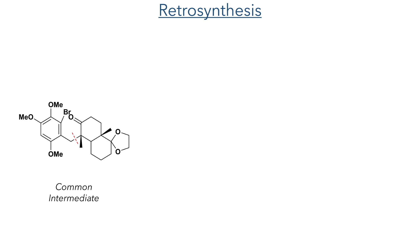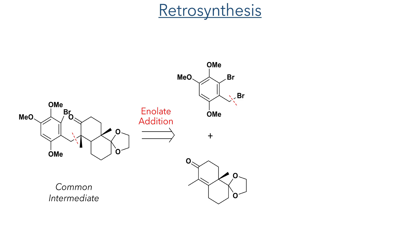This common intermediate contains a polyoxygenated aromatic ring bearing a bromide and a six-membered ring bearing a ketone. Disconnecting this molecule leads back to two fragments: a highly functionalised aromatic ring and a tricyclic enone, which is easily accessed from the Wieland-Miescher ketone. The aromatic intermediate can ultimately be derived from a previously reported trimethoxybromobenzaldehyde.